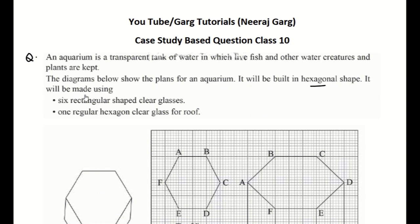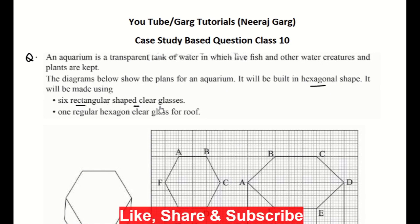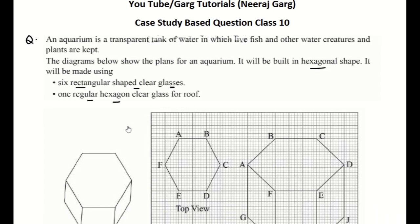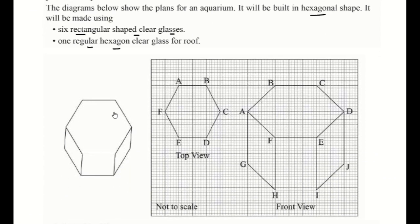It will be made using six rectangular shaped clear glasses and one regular hexagon clear glass for the roof. This diagram has been made of this kind of aquarium. This is our top view and the front view is in this way.